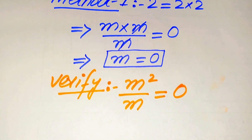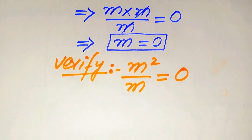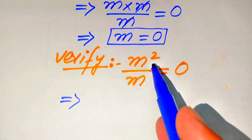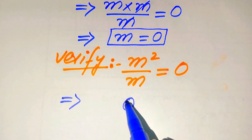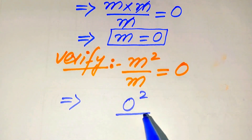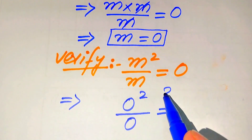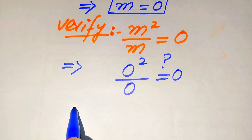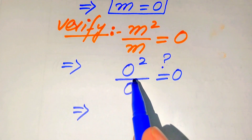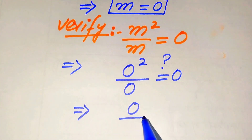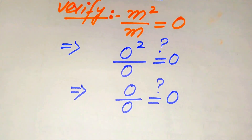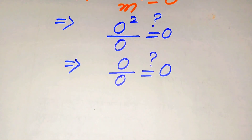Now we put the value m = 0 into both the numerator and denominator. It becomes 0 squared divided by 0, and we check whether this equals 0 or not. Here 0 squared becomes 0, so we have 0 divided by 0, and we check whether this equals 0.